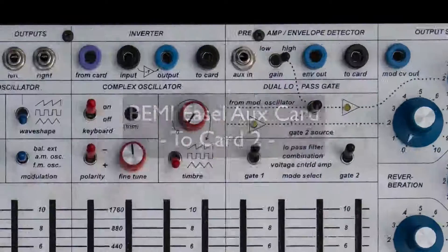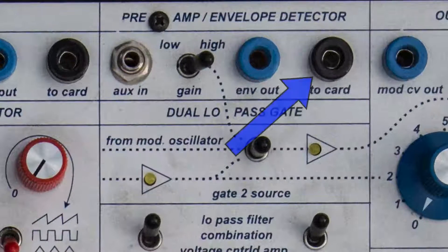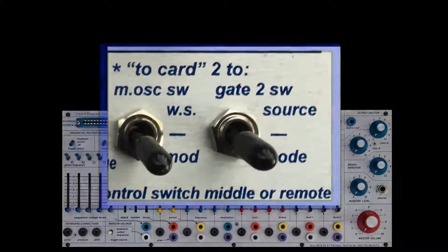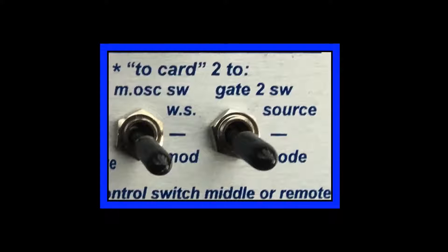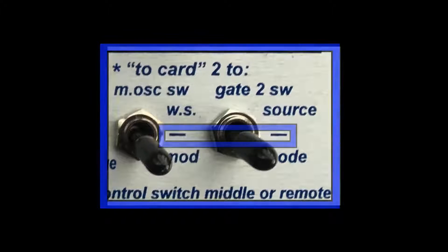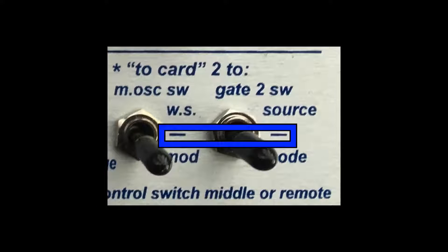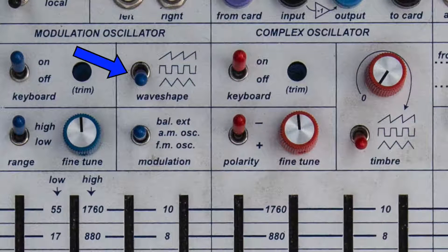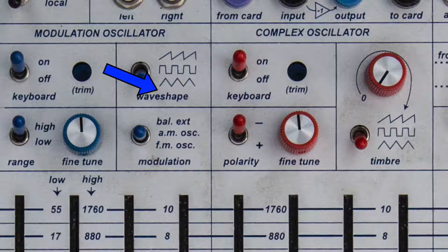Sending any control voltage to the Two Card Two input jack on the easel automatically routes it to the Two Card Two switches. Both switches in the center position have no effect. Switch number one in the upper position controls the wave shape of the mod oscillator. Therefore, the wave shape switch on your mod oscillator needs to be in the low triangle position for the control voltage to have any effect.